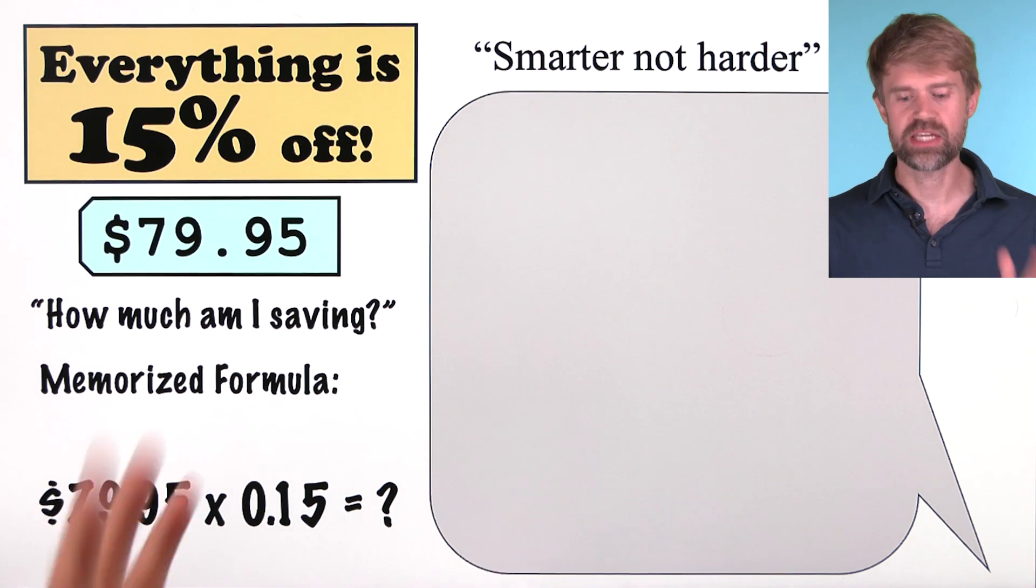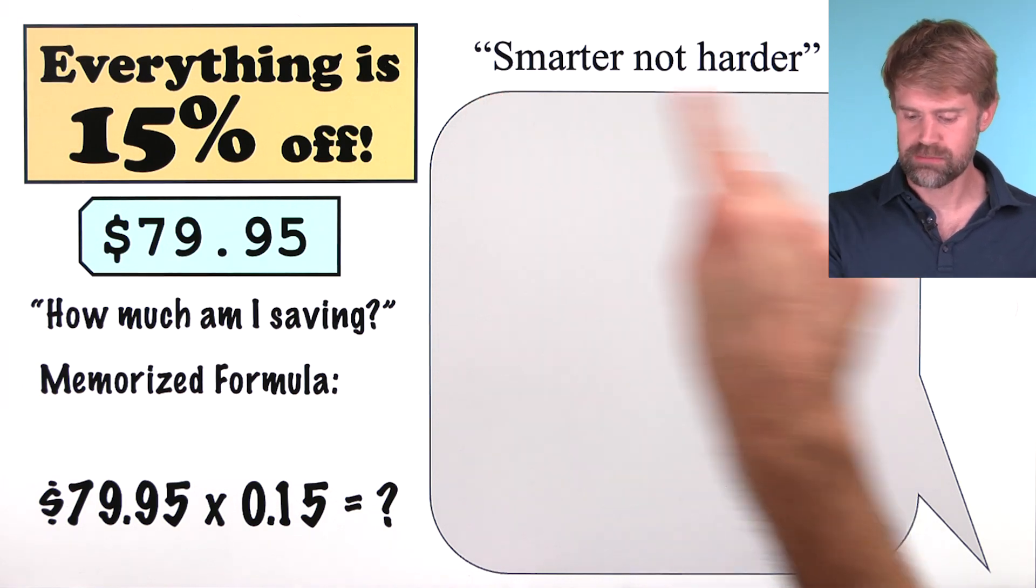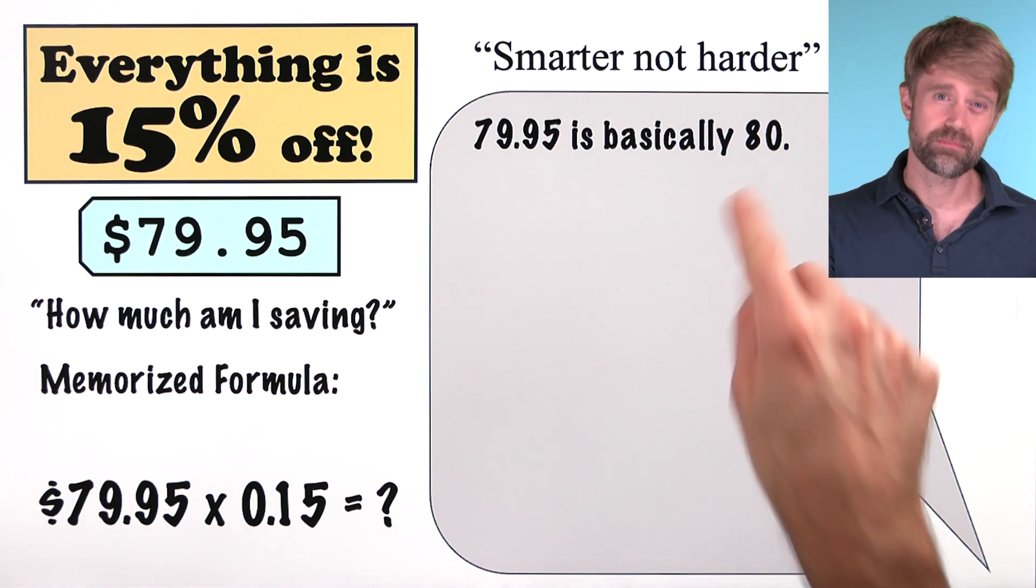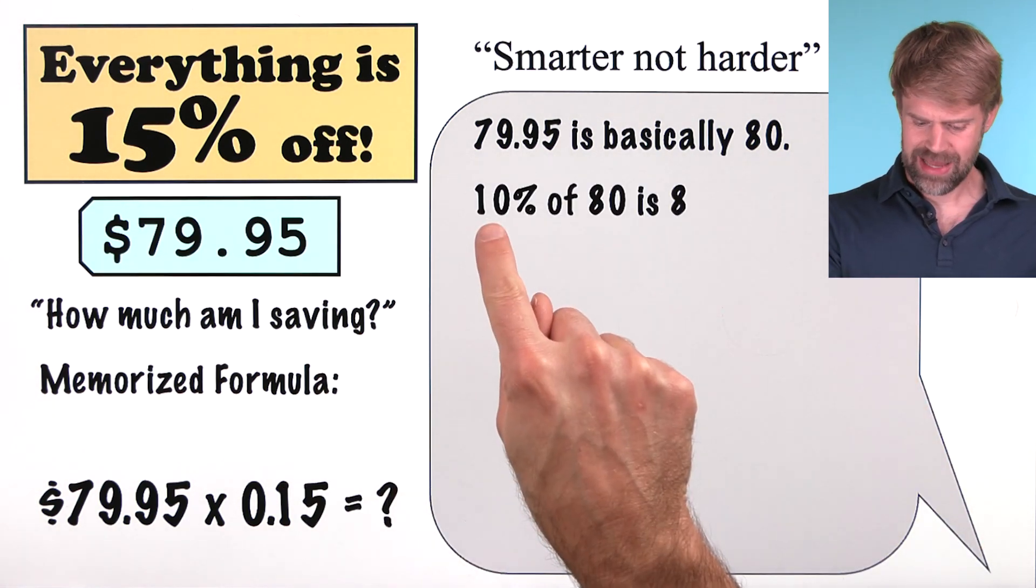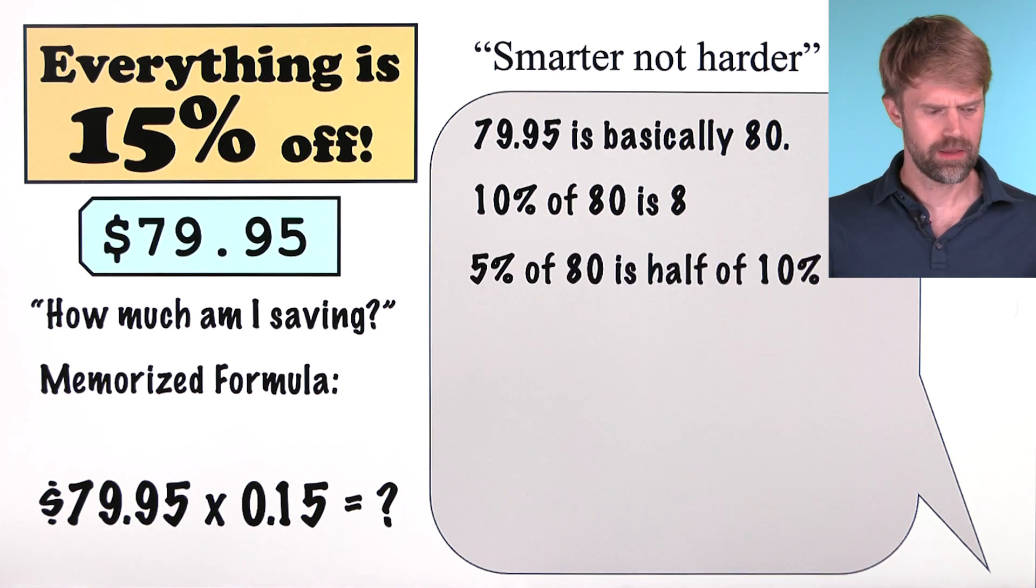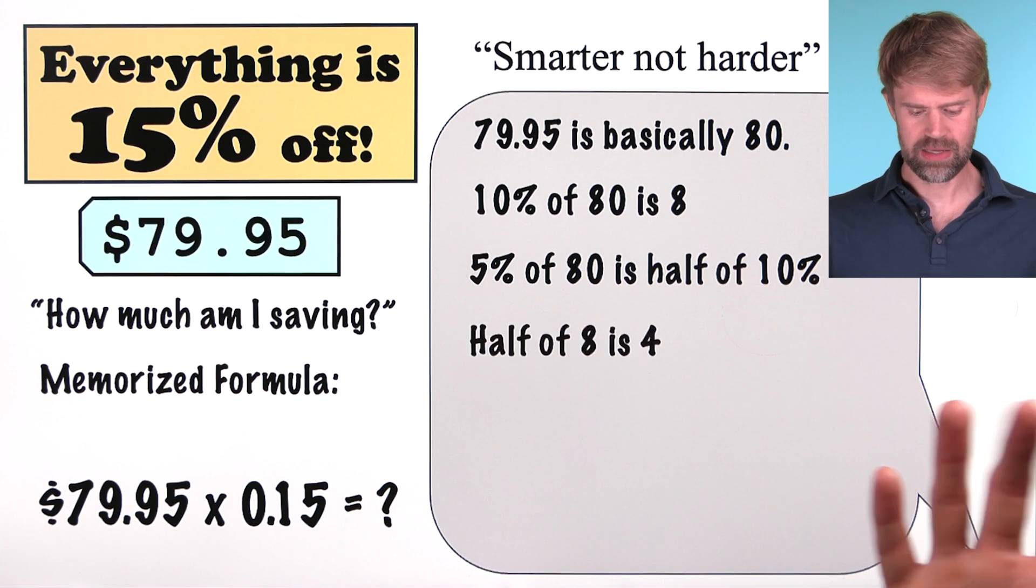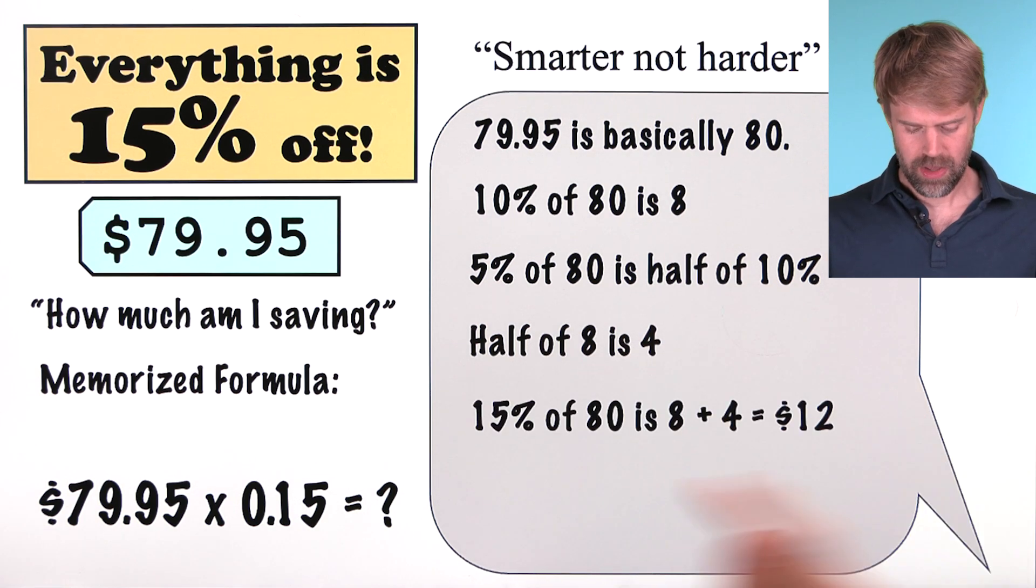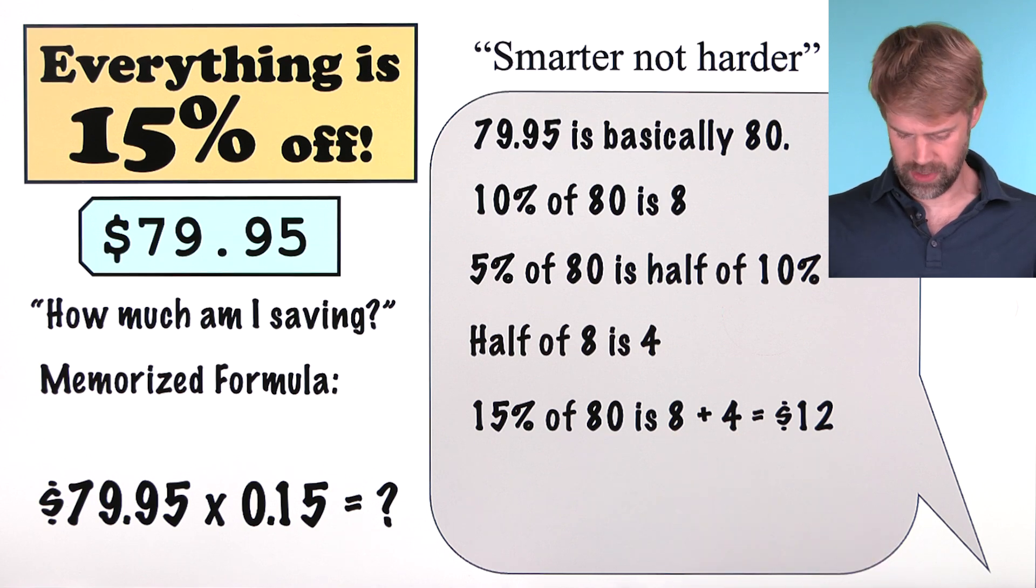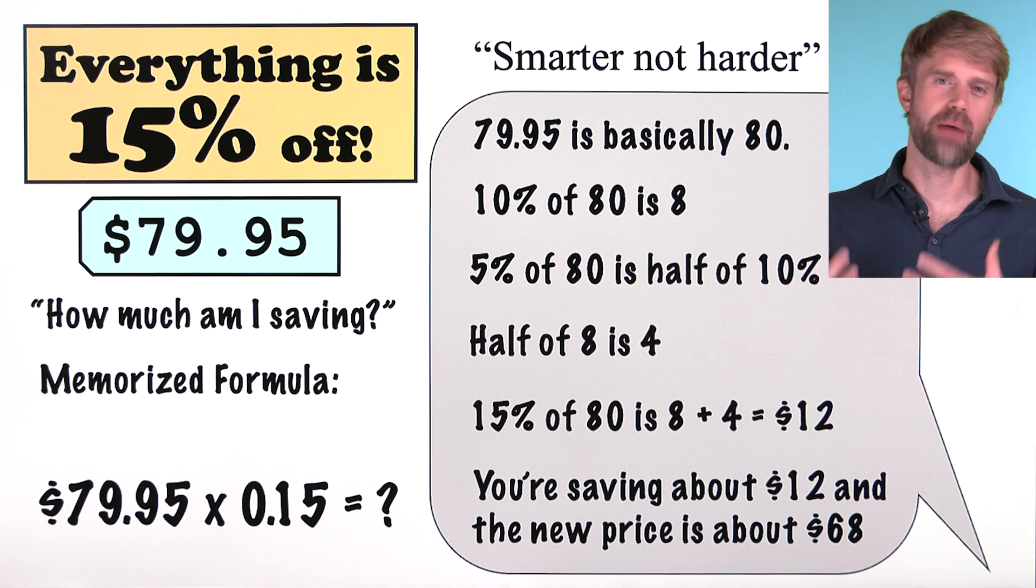The way my dad would solve this is very different because he had a deep understanding. He was a master of smarter, not harder. He'd start by saying, look, $79.95 is basically 80. That makes the math a lot easier. Then 10% of 80 is 8. It's one-tenth. You just move the decimal point over. Now, 5% of 80 is half of 10% of 80. So half of 8 is 4. That means 15% of 80 is 8 plus 4 equals $12. So you're saving about $12 and the new price is about $68.